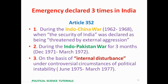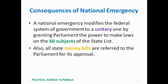Third, on the basis of internal disturbance under controversial circumstances of political instability from June 1975 to March 1977. When a national emergency is declared, it modifies the federal system of government to a unitary one by granting Parliament or the central government the power to make laws on the 66 subjects of the State List.